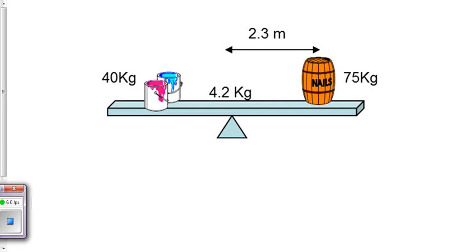This question, we have a simple seesaw with nails weighing in at 75 kilograms, which is 735 newtons. So we'll draw an arrow straight down to represent 735 newtons, a distance of 2.3 meters from the fulcrum.